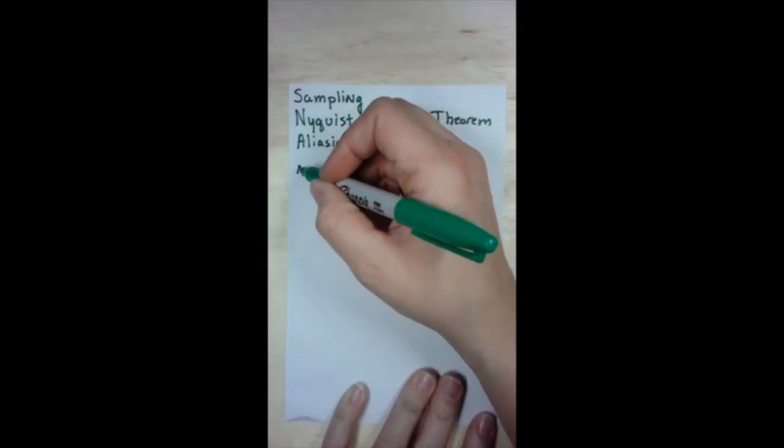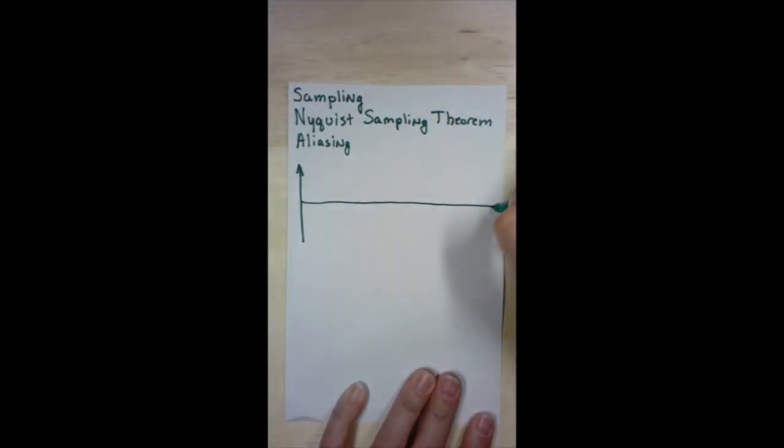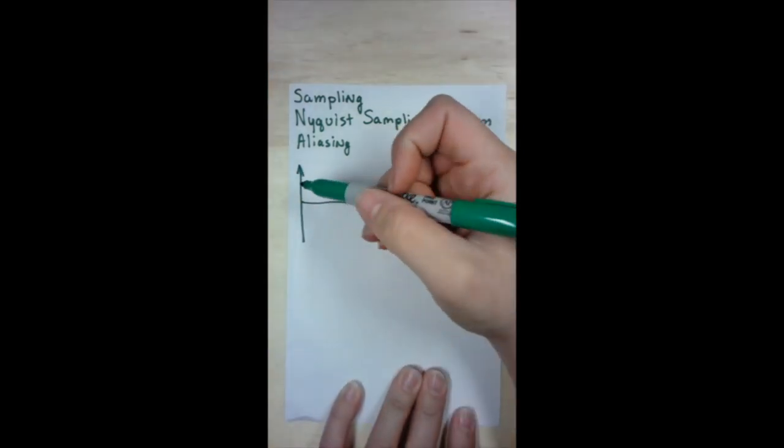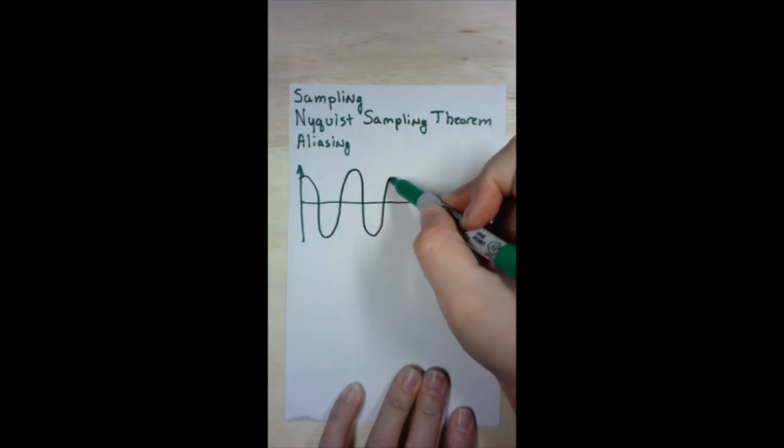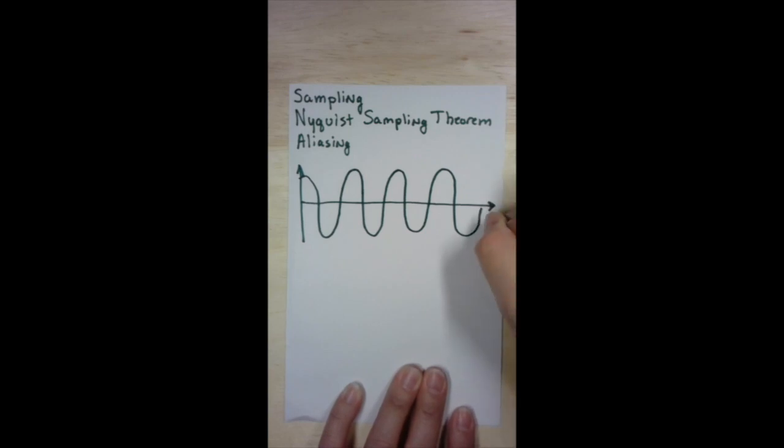For example, we'll draw a sine wave. Okay, this represents our physical signal, an analog signal in the physical world. And we want to be able to store this signal on a computer. So how do we do that? We do it by sampling.